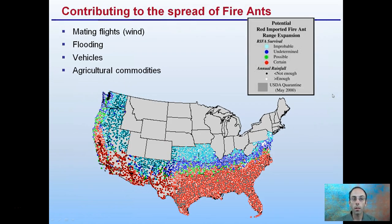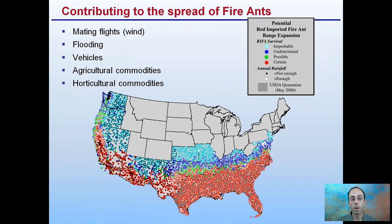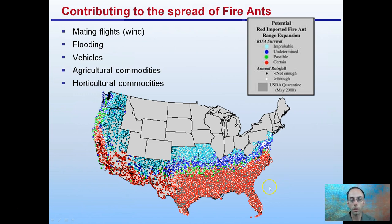Contributing to the spread of fire ants are mating flights within the wind, flooding pushing them into different areas, hitchhiking on vehicles, and agricultural and horticultural commodities shipping them throughout large regions of the world. On a global map, red areas represent certain infestation, green represents very possible conditions, and blue regions are less likely but still possible. They definitely prefer warmer environments, but they are expanding.